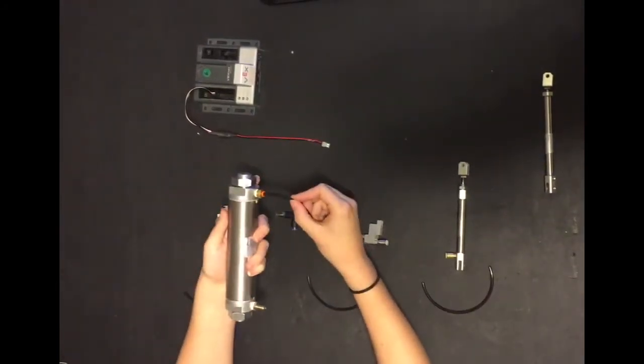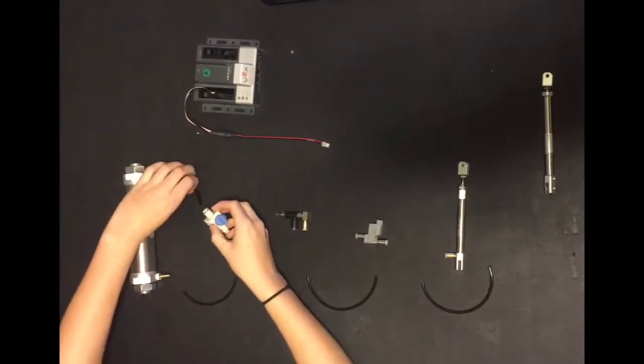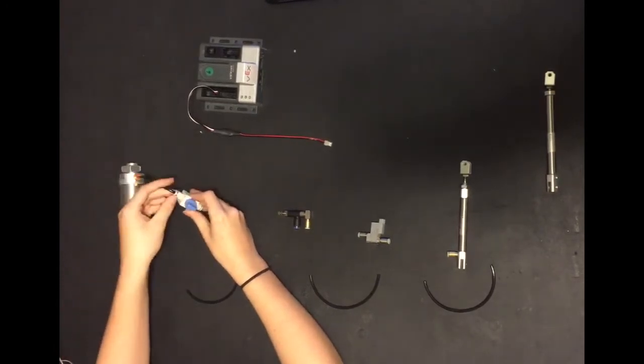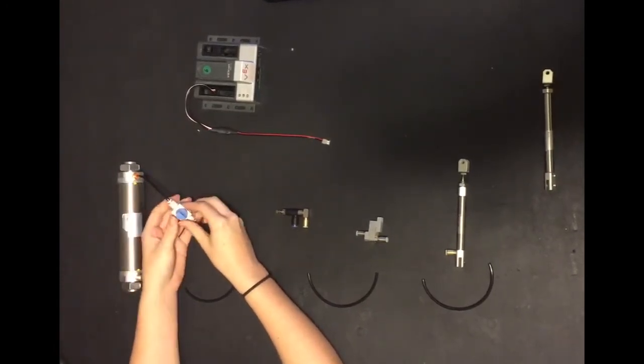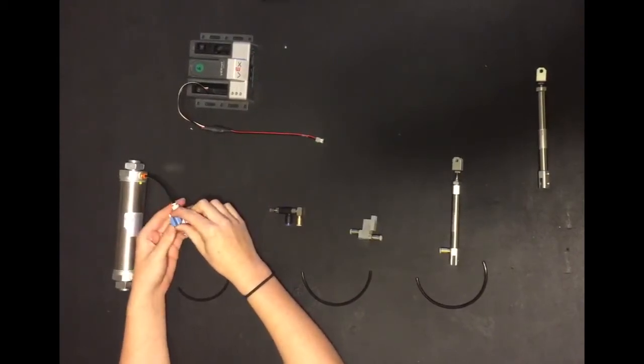You're going to want to plug in a piece of the tubing into the fitting end and plug the end of that tubing into the end of the on and off switch with the little arrow on it. You're going to want to make sure that your on and off switch is facing this way so that the air can be let through.